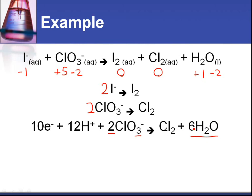Now we've got 12 hydrogens on the right hand side. So on the left hand side here I've added 12 H plus. We're now balanced for oxygen and hydrogen.